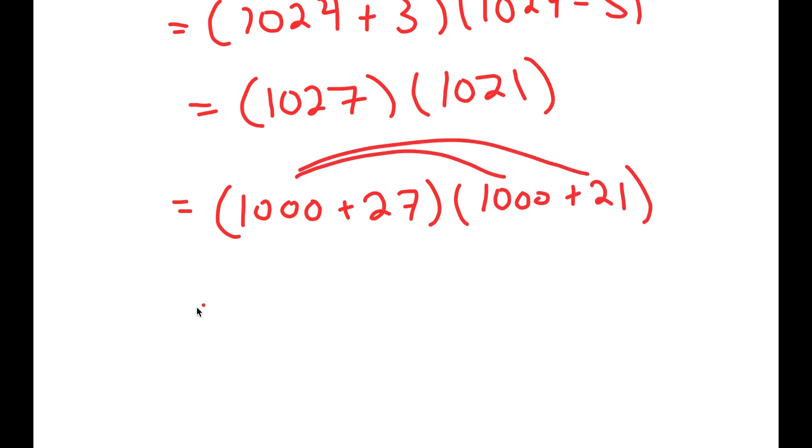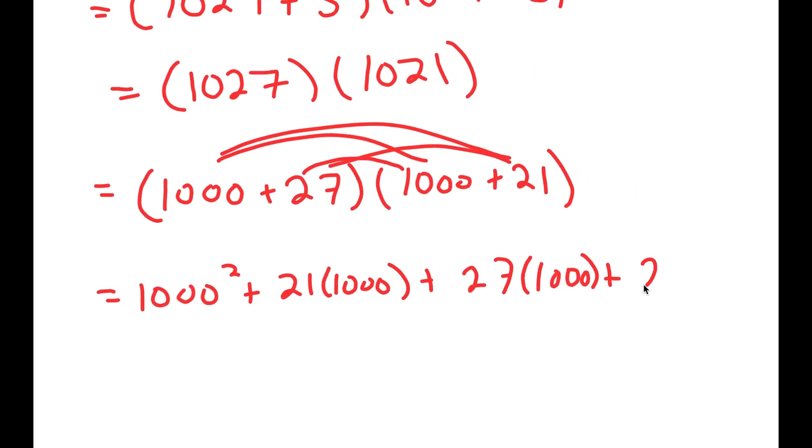So now I can distribute 1,000. So I get 1,000 squared plus 21 times 1,000 plus 27 times 1,000 plus 27 times 21.